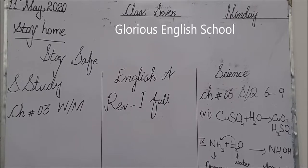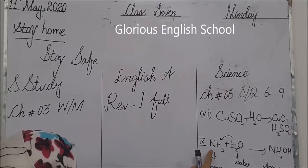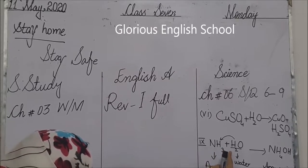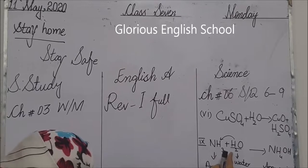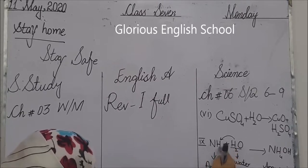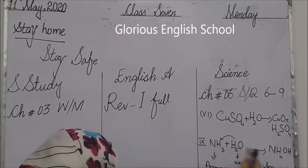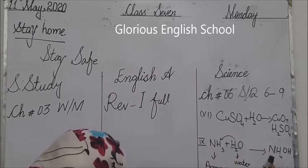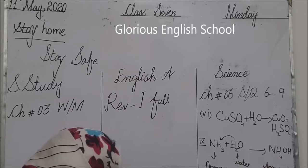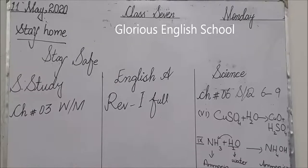Question number 9: write down the chemical equation showing the reaction of ammonia and water. Ammonia is NH3 and water is H2O. When ammonia reacts with water, H joins to form NH4 and OH combines to complete NH4OH, which is the formula of ammonium hydroxide. Our science diary is complete.